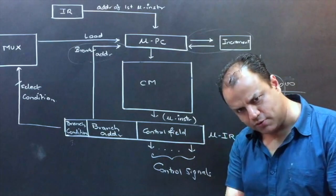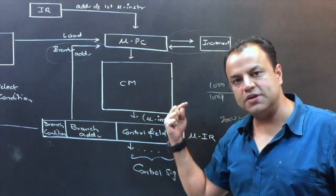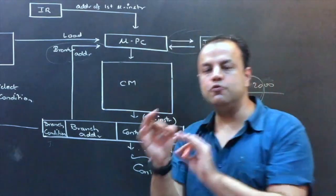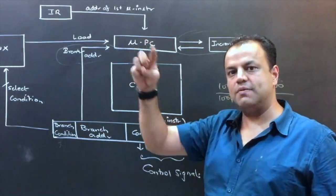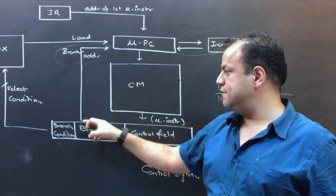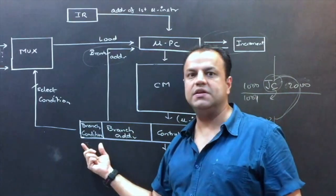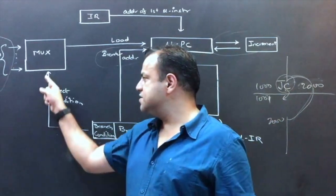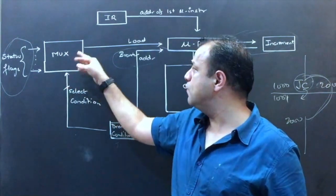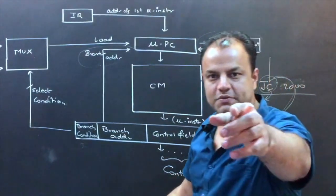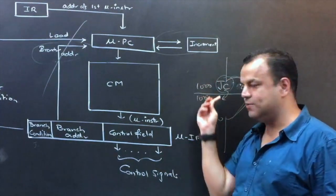Normal micro instructions will not have a branch address at all — only a control field — and MUPC will simply get incremented sequentially. If there is a branch: unconditional means the branch address is loaded into MUPC directly; conditional means two options — if the condition is true the branch address is loaded, if false MUPC is incremented. The MUX selects the condition flag (JC, JNC, JZ, JNZ, etc.) and based on true or false decides whether to load the branch address or increment MUPC.